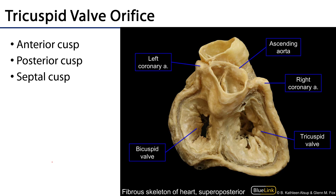Here is a view of the atria with the walls of the atria removed as well as that septum, so there would be the interatrial septum and we can see the orifice for the tricuspid valve. That tricuspid valve gets its name as tricuspid because there are three cusps: there is an anterior cusp, a posterior cusp, and a septal cusp. That septal cusp is largely immobile so it doesn't move during the opening and closing of the valve.